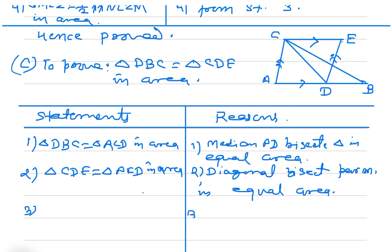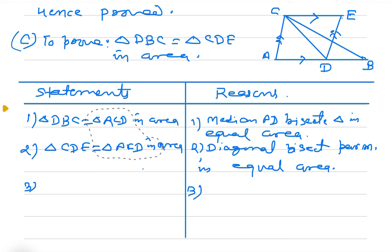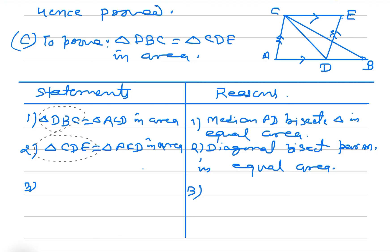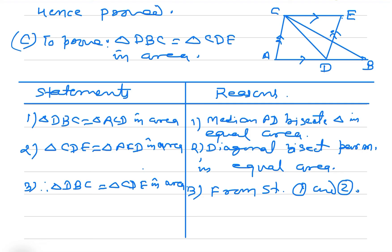Now for statement three: looking at statements one and two, both have triangle ACD on the right-hand side. Since the right-hand sides are equal, the left-hand sides must also be equal. Therefore, triangle DBC is equal to triangle CDE in area. This follows from statements one and two. Hence proved.